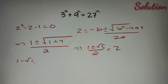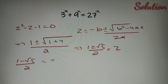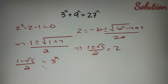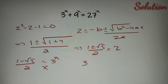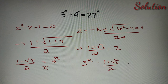The value (1 minus root 5) divided by 2 is also not possible, because this value of z is essentially the value of 3 raised to the power x, and we know that 3 raised to the power x cannot be a negative value. So this value is also eliminated, and we only have one value for 3 raised to the power x, which is (1 plus root 5) divided by 2.